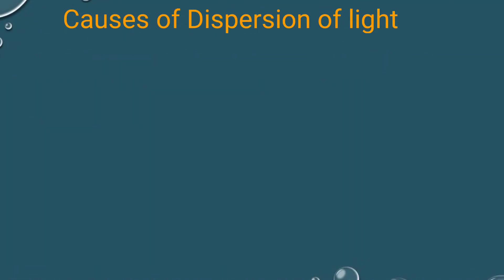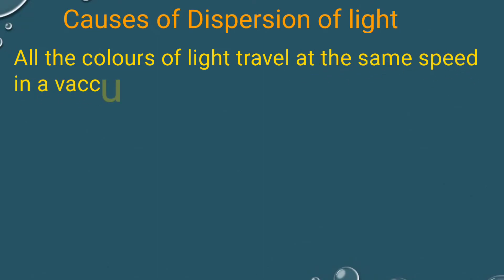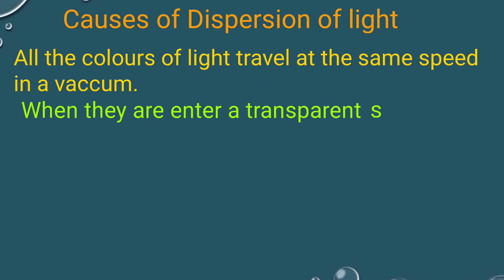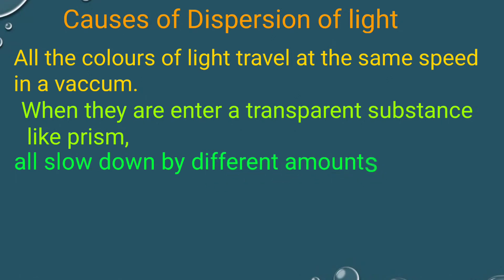Now we discuss causes of dispersion of light. All colors of light travel at the same speed in a vacuum. When they enter a transparent substance like a prism, they slow down by different amounts depending on their wavelength.